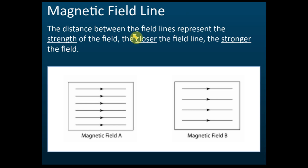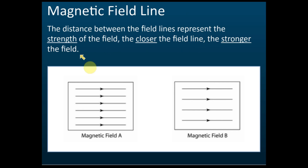The strength of the magnetic field is represented by the distance between the field lines. For example, where the lines are close to each other, the field is strong. Where the lines are far from each other, that is a weaker field. So the closer the field lines, the stronger the field — and this one here is a stronger field, while this one is a weaker field.